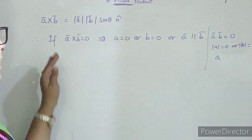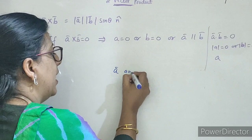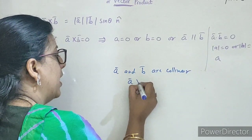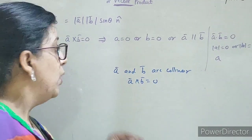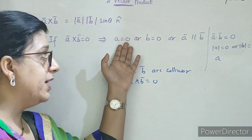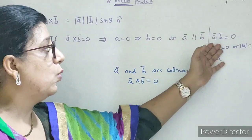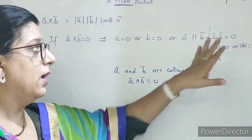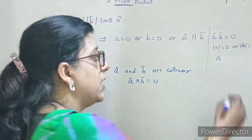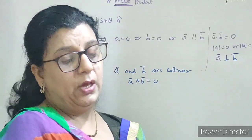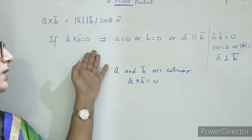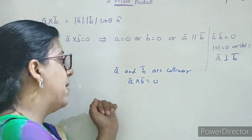Students, abhi hum ne dekha ki agar vector A and B are collinear, to us case mein A cross B equal to zero. Iska ulta kya hoga? If A cross B is zero, to ya A zero hoga, ya B zero hoga, ya phir do no vectors aapas mein parallel honge. Dot product mein: A dot B zero — to mod A zero, mod B zero, ya phir A perpendicular to B. Yaad rakhna: dot product zero matlab vectors perpendicular hain; cross product zero matlab vectors collinear ya parallel hain.